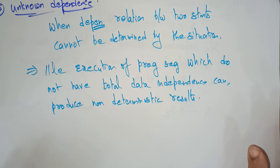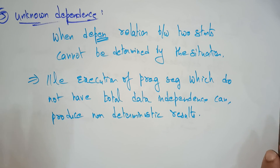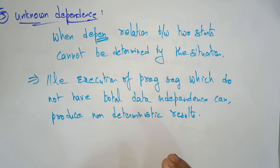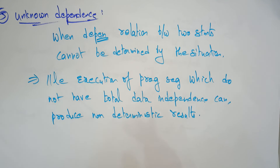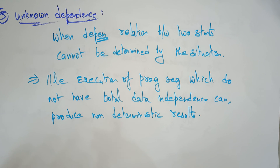So this is about data dependency — there are five different types. In the next video, I will take a simple example and explain how data dependency is identified using a sequence of statements, showing what types of dependencies exist. Thank you.